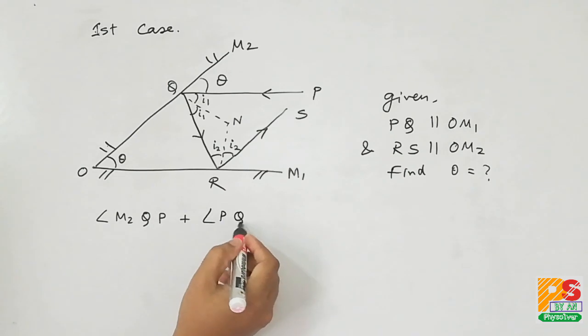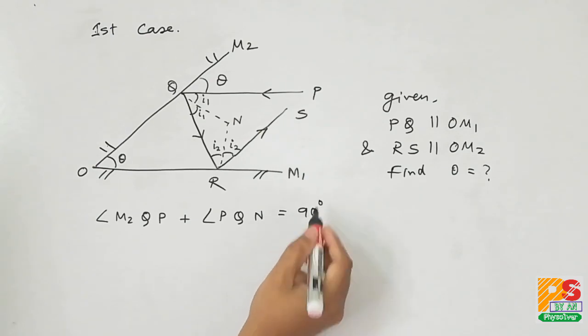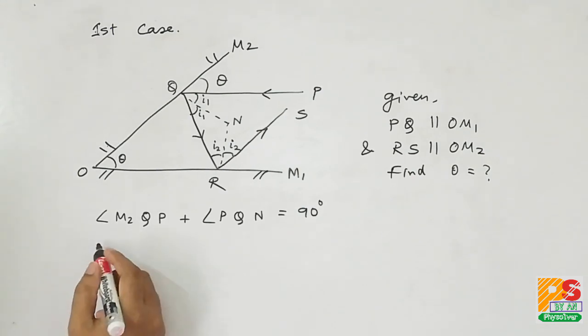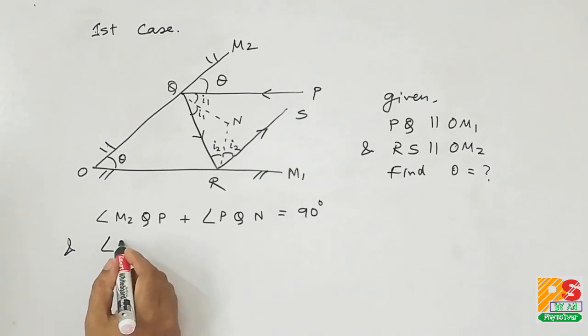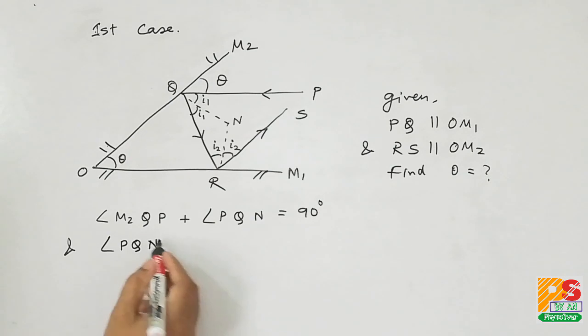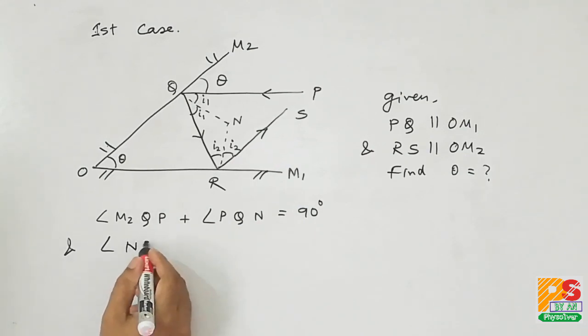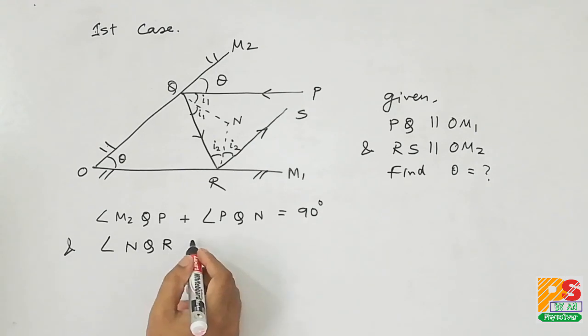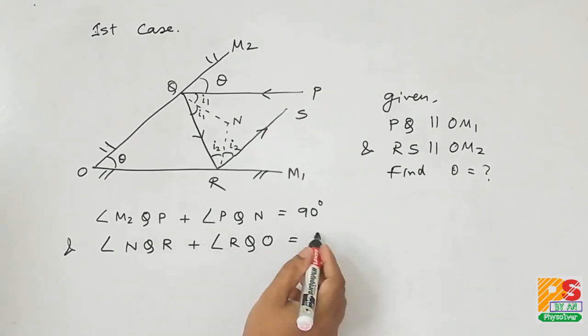That is angle M2QP plus angle PQN equals to 90 degrees since QN is normal to OM2 mirror. For the same reason, angle NQR plus angle RQO should also be 90 degrees.